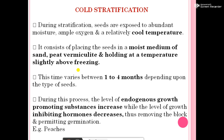Cold stratification: during stratification, the seeds are exposed to abundant moisture, ample oxygen, and relatively cold temperature. It consists of placing the seeds in a moist medium of sand, peat, or vermiculite and holding at a temperature slightly above freezing. This period varies from 1 to 4 months depending upon the type of seed. During this process, the level of endogenous growth-promoting substances such as gibberellic acid and cytokinin increases, while the level of growth-inhibiting hormones like abscisic acid decreases, removing the block and permitting germination. For example, peaches.